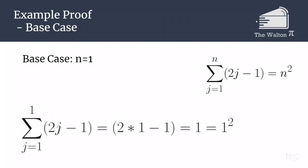So if we look at the sum from j equals 1 to 1 of 2j minus 1, that's just going to be 2 times 1 minus 1, which is equal to 1, which is the same as 1 squared. So our base case holds.